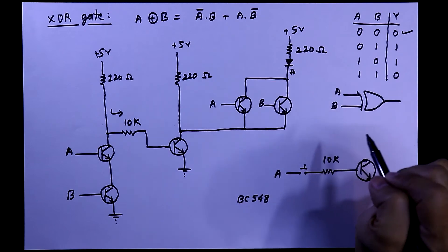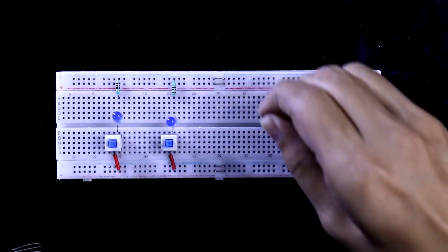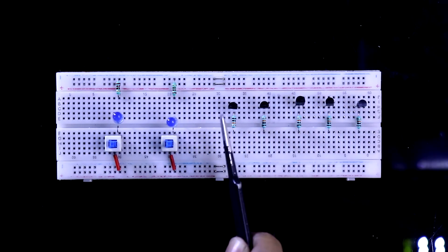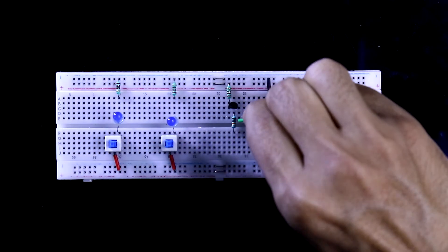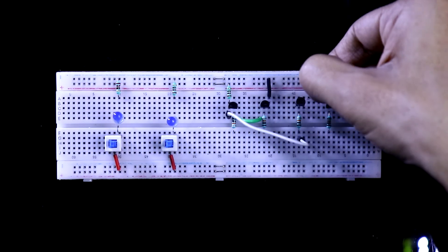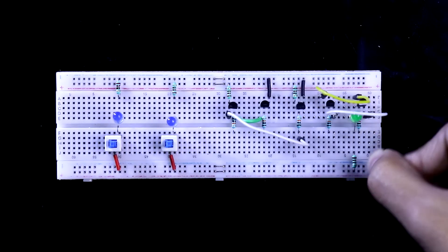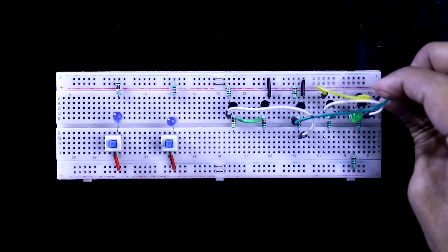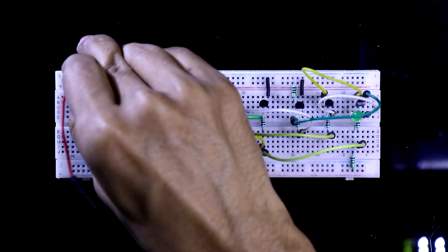Now we will see this on the breadboard. Putting two switches with one pin connected to plus 5 volts. To see the input I'm connecting an indicator LED. Placing the transistors with the base connected through a 10 kilo-ohm resistor. These two transistors will be our AND gate and these two will be our OR gate. The emitter is connected to ground, the collector is connected to plus 5 volts through a 220-ohm resistor. The AND gate is completed; this collector connects here. Emitter to ground, collector to plus 5 volts through 220 ohms. Both emitters and collectors connected, and the output LED's positive pin is connected to plus 5 volts through a 220-ohm resistor.